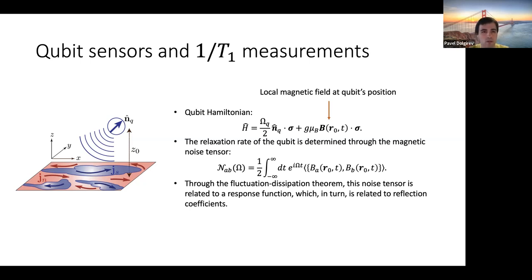When one thinks about one over T1 measurement, then there is a very quick exercise to show that this relaxation rate will be given by magnetic noise tensor, which is nothing but a correlation function of this type shown here. Now, in turn, to understand and appreciate what the content of this object is, I can use the fluctuation dissipation theorem and relate this magnetic noise tensor to various reflection coefficients. And those various reflection coefficients are related to conductivities.